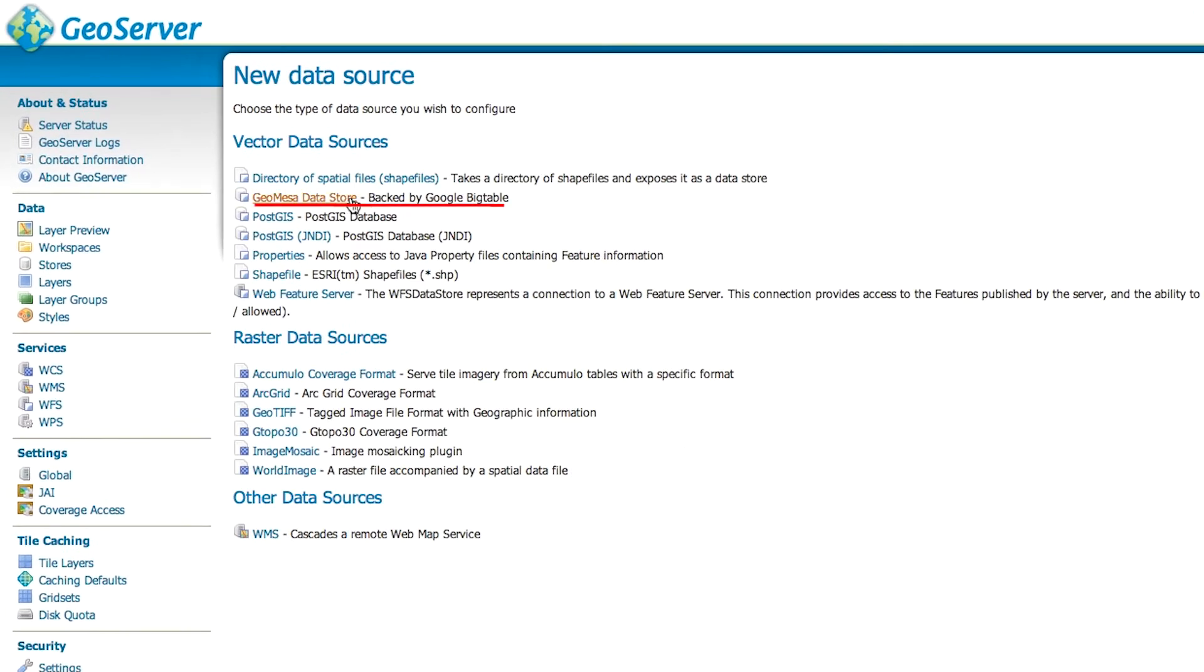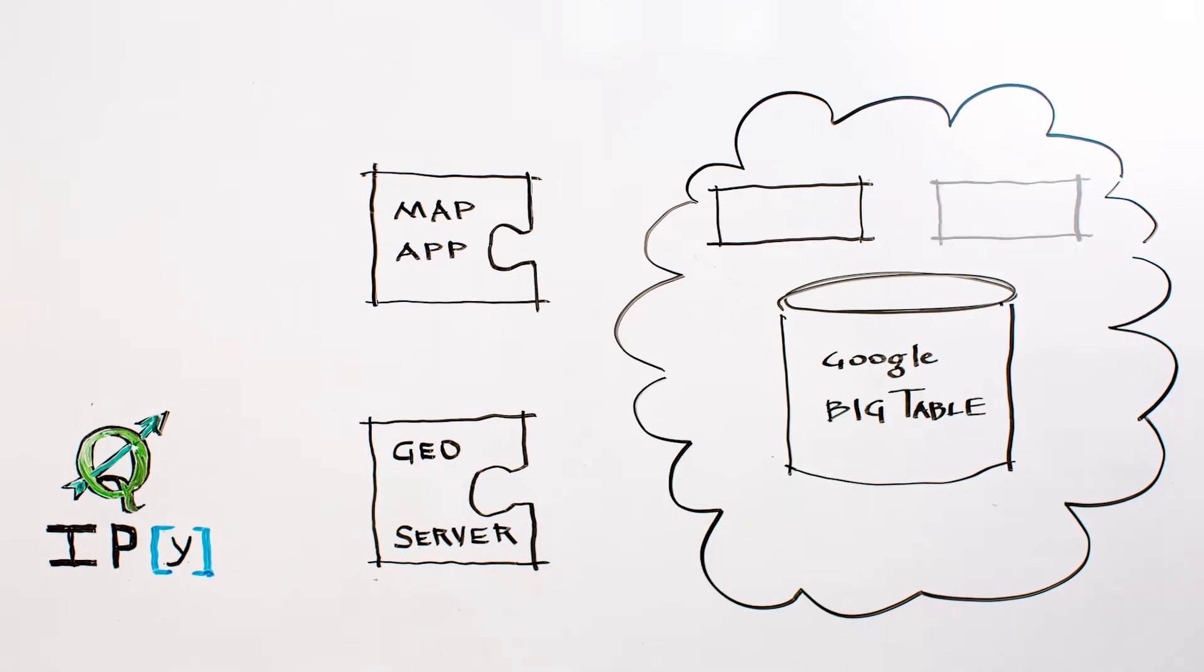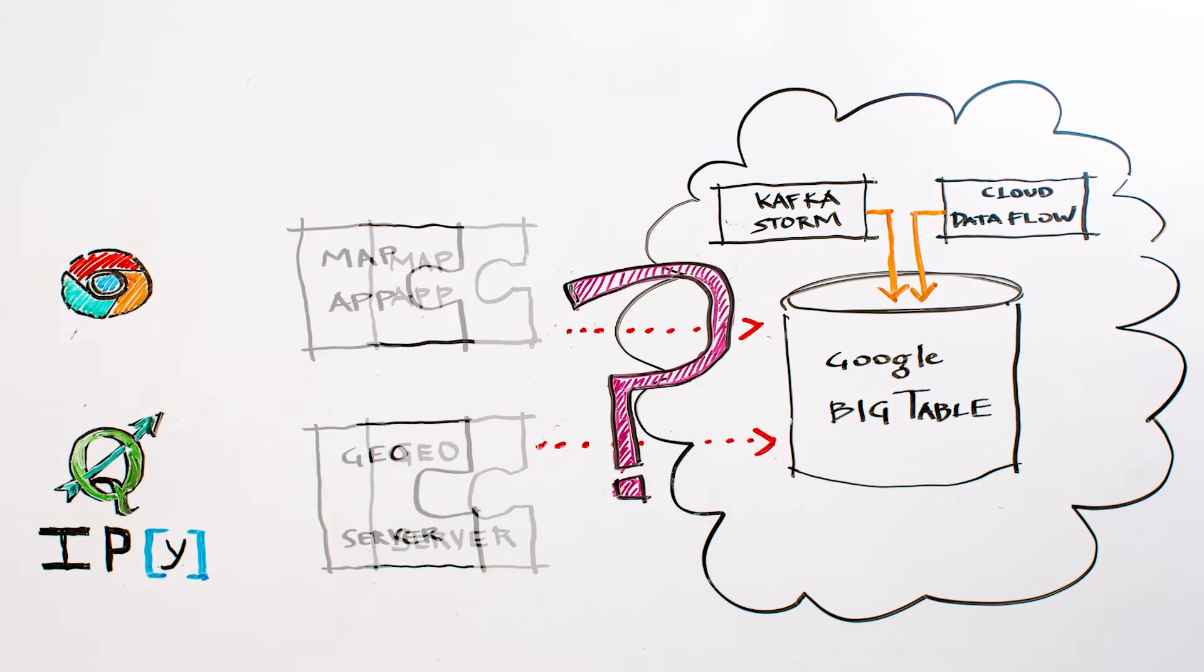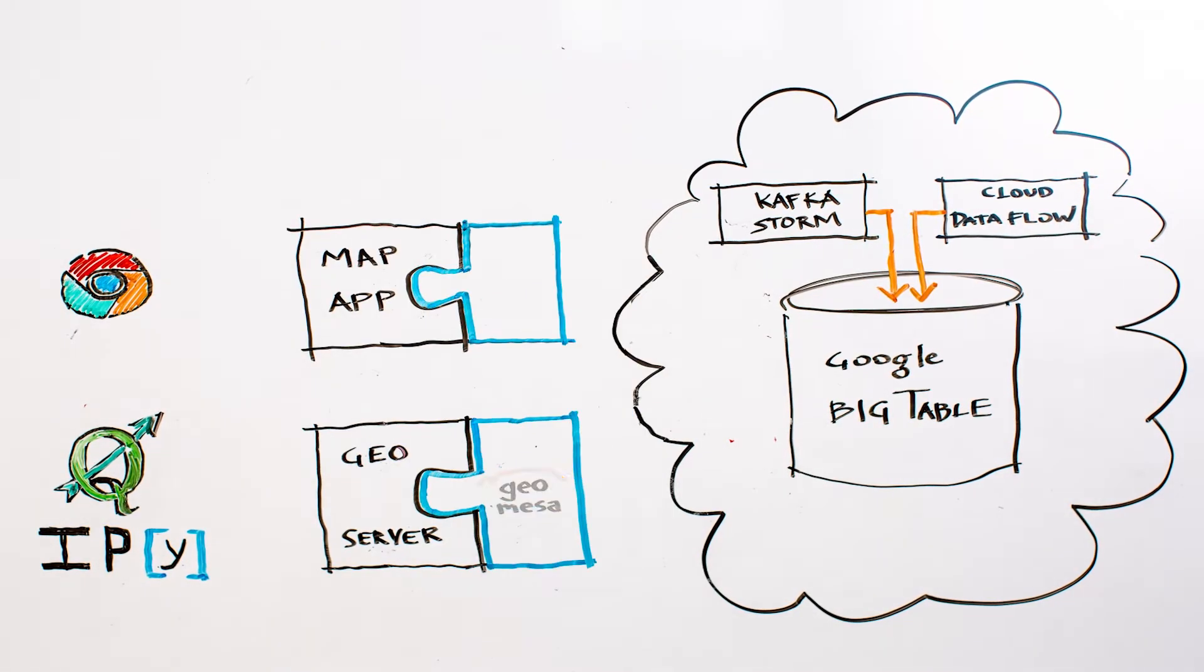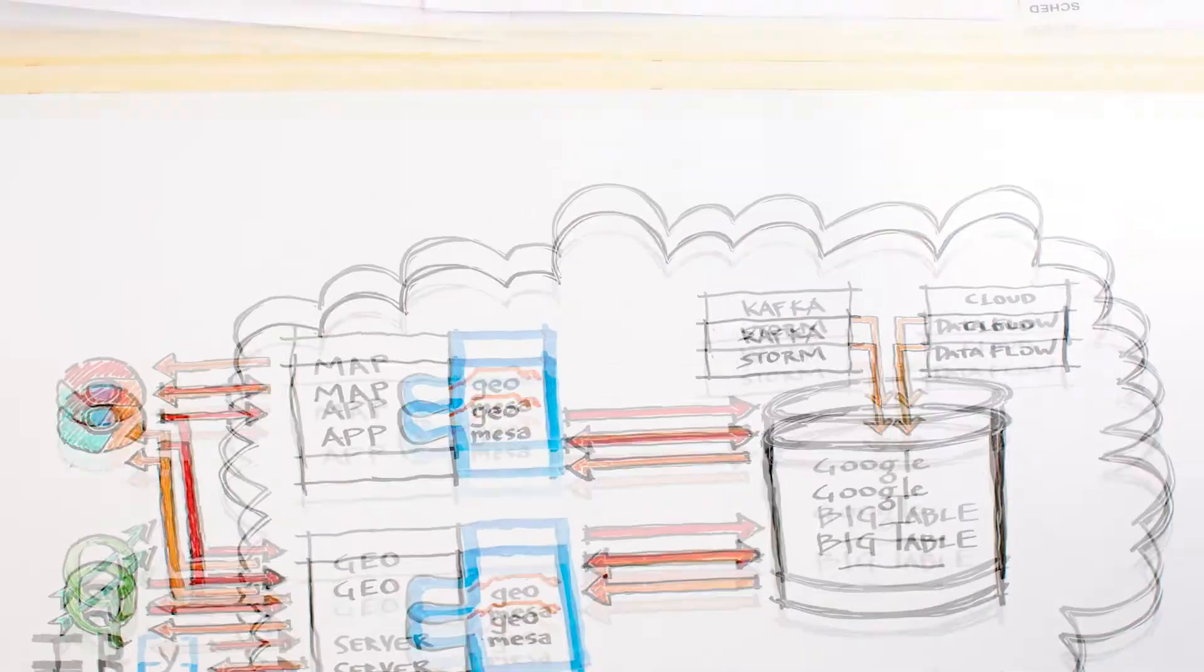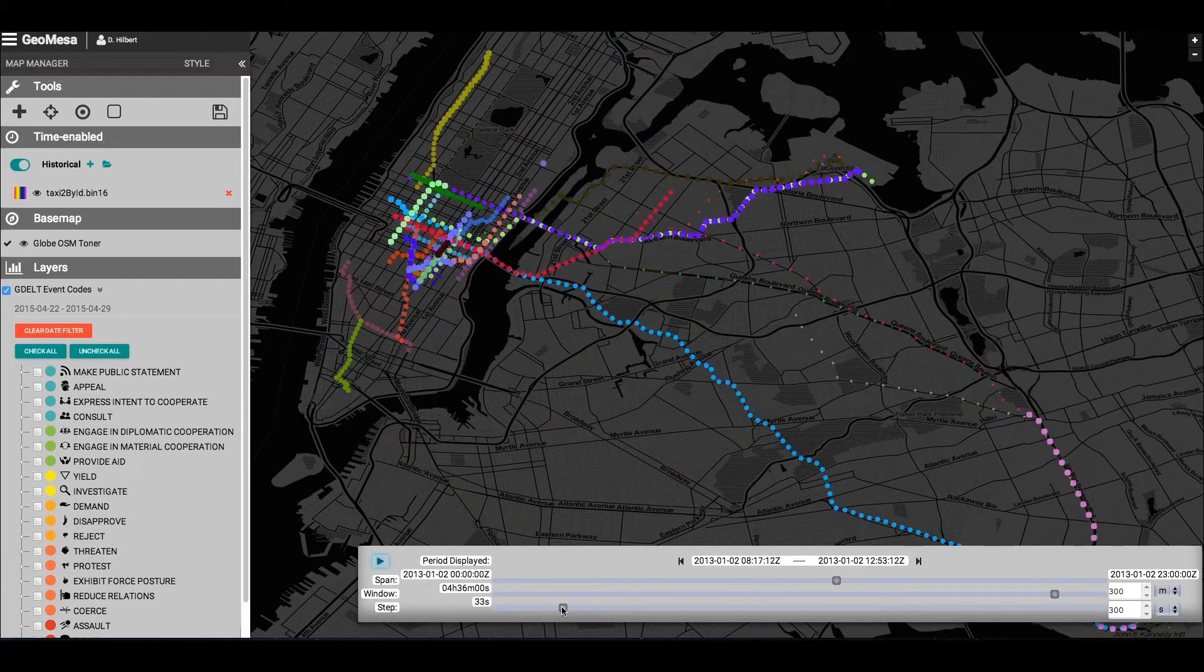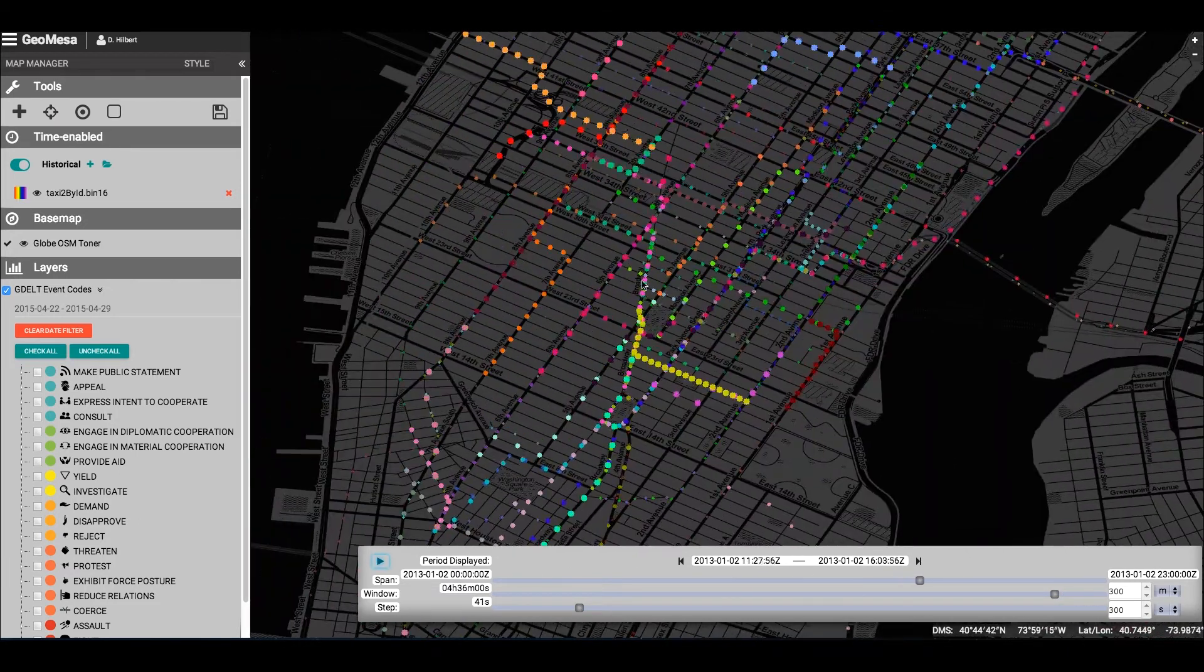Through GeoServer, GeoMESA implements the OGC interfaces against Google Bigtable. With both programmatic and service-based access, GeoMESA supports a range of capabilities within your application. Let Google Bigtable provision your infrastructure for super-fast querying, seamless scalability, and low-latency real-time data streams.